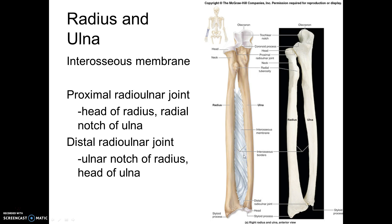A third joint to mention here is the interosseous membrane, which is classified structurally based on the fact that dense regular connective tissue joins bone to bone. We classify that structurally as a fibrous syndesmosis, just as we did in the lower limb. There is a small degree of movement at the interosseous membrane due to supination and pronation, so we refer to that joint functionally as an amphiarthrosis.